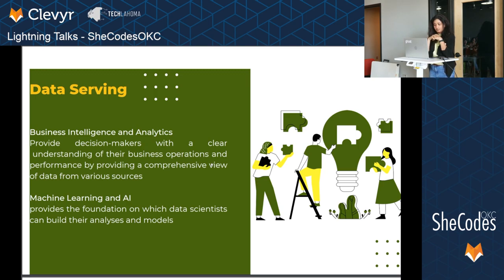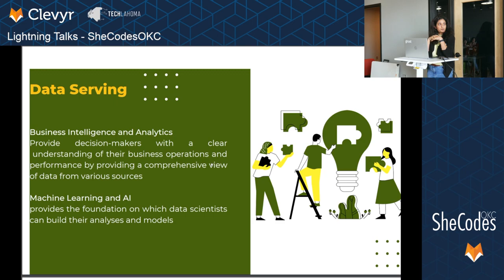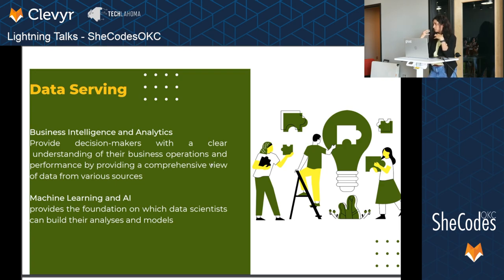In terms of business intelligence and analytics, we help the decision makers or stakeholders understand what's going on in their business operations and give an overall view of the objectives — how we're doing and how it could be improved. And for machine learning and AI, we input data to ChatGPT, Netflix, Airbnb, and Uber, giving them data so they can do good things with it.